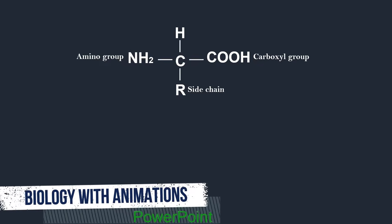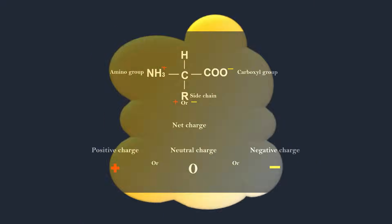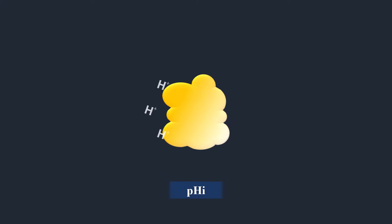Depending on the pH of their environment, the amino group can be protonated and become positively charged. The carboxyl group can be deprotonated and become negatively charged. And the side chain of some amino acids can become positively or negatively charged due to the gain or loss of protons. So the net charge on the molecule can be positive, neutral, or negative. The isoelectric point, or pHi, is the pH at which a protein carries neutral charge.